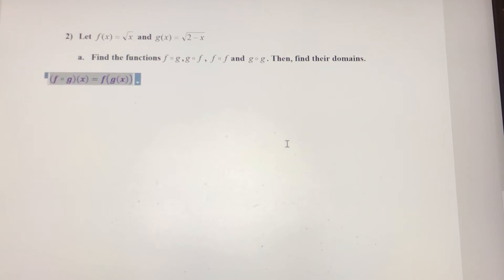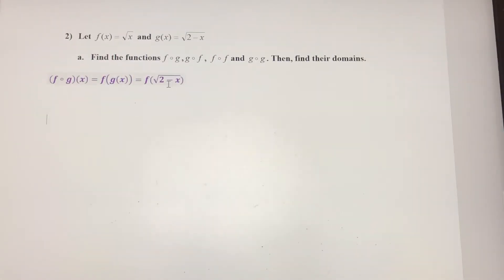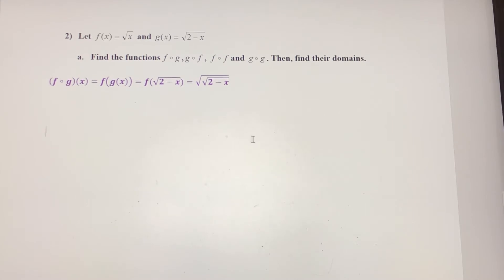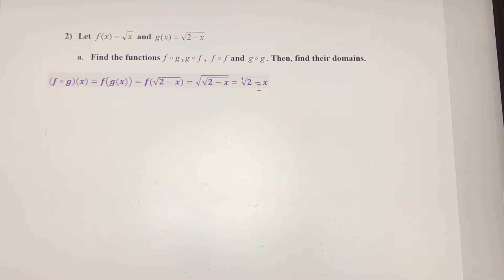Let's find f of g first. So f of g of x — I'm going to take g of x and plug it into function f. So I'm going to find f of the square root of 2 minus x. I take this radical 2 minus x and replace x with it, giving me the square root of the square root of 2 minus x. When you have consecutive square roots, it ends up being a fourth root — the fourth root of 2 minus x. Each square root is to the one-half power, and multiplying those gives one-fourth, which is why we have a fourth root.